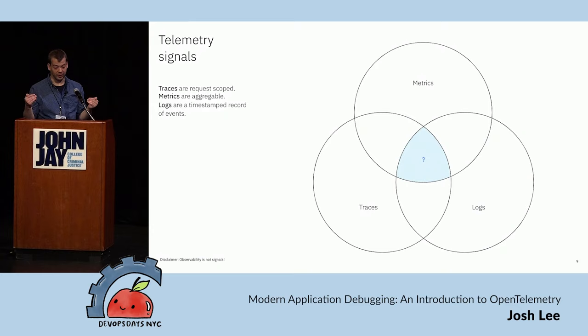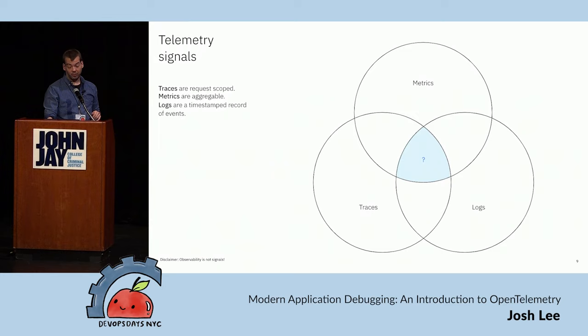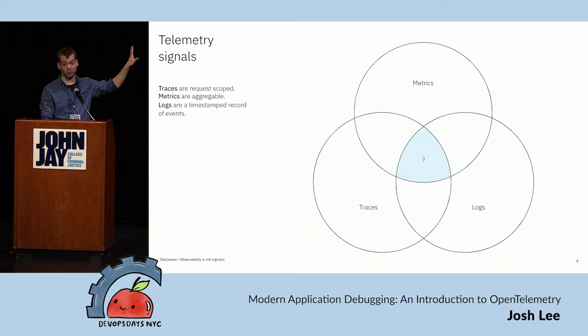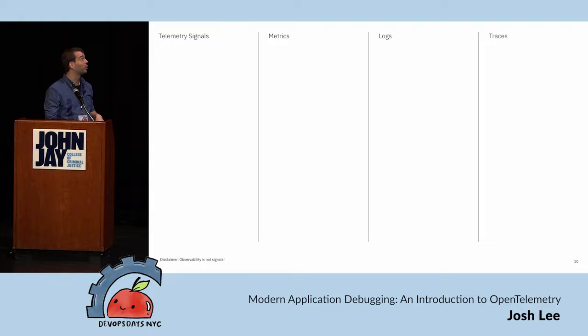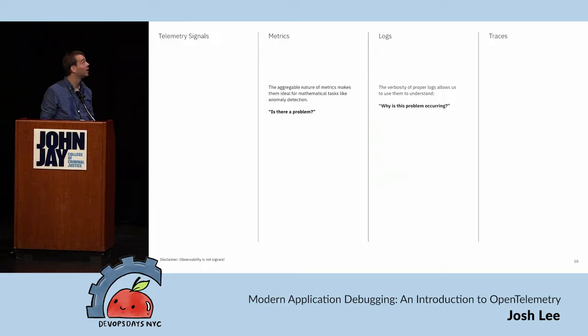Metrics are aggregable — we can do math with them. Logs are a timestamped record of events; they're verbose and let us put in as much information as we want. One thing I want to point out: observability is not just signals. This might look like the three pillars — I'm mentioning it because it becomes relevant when we talk about OpenTelemetry, not because this is what observability is. These are the three signals OpenTelemetry currently supports: metrics, traces, and logs.